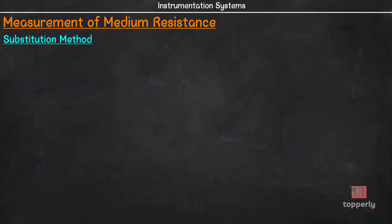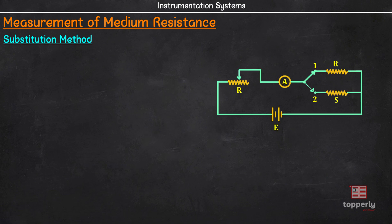Just like the name implies, in Substitution method, we are substituting a standard resistance in place of unknown resistance to find its value. Here is the connection diagram. We have a battery E, an ammeter, a variable resistance RH which is used to control the current in the circuit, a standard variable resistance S and the unknown resistance R whose value is to be measured. This switch is used for putting resistances R and S into the circuit alternatively. Now, let's see the procedure for measurement of resistance in this method.